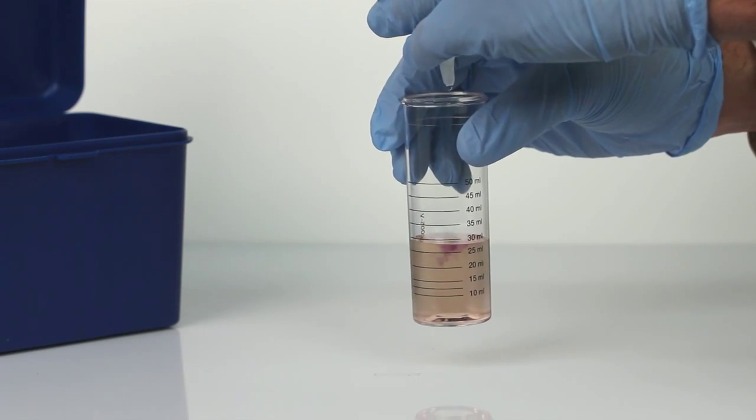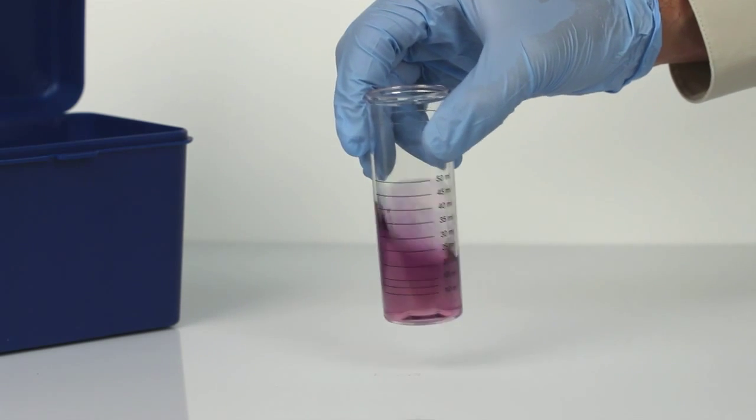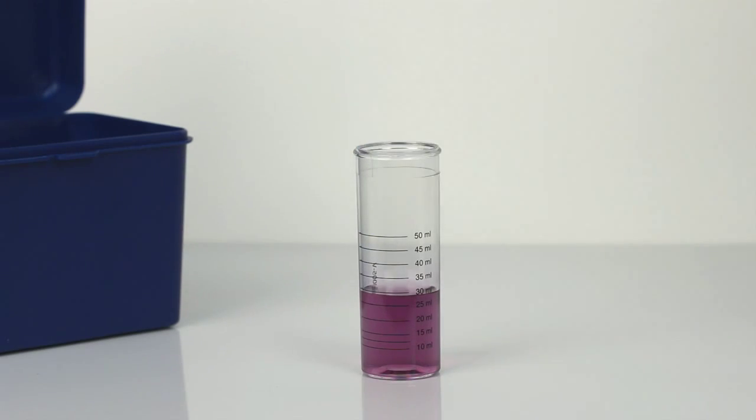Hold the bottle vertically and add the titrant one drop at a time. Swirl the vial after each drop. Count the number of drops until the sample color changes from yellow to blue-purple.